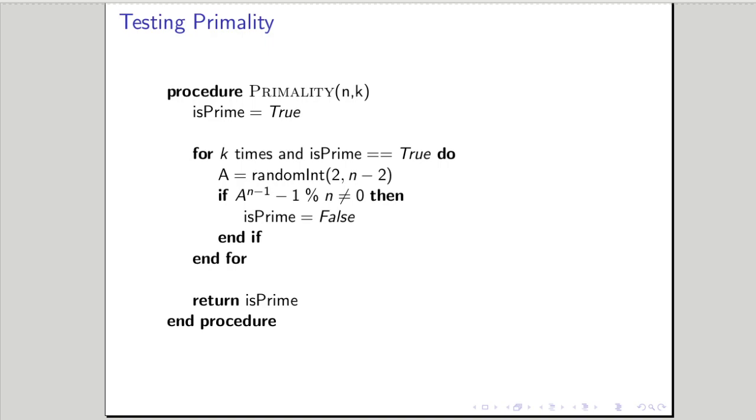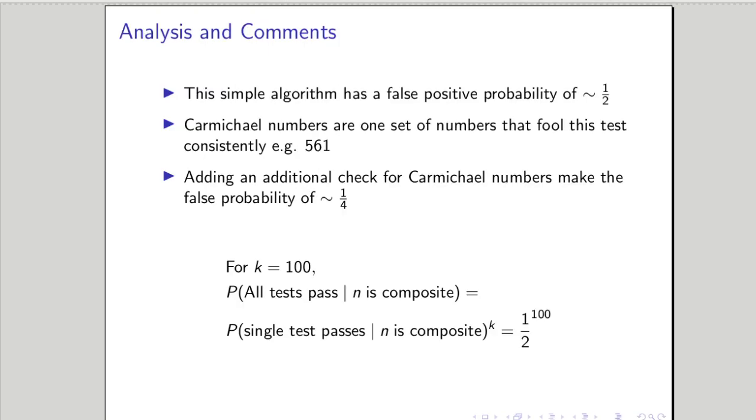Let's look at the rest of the aspects of random algorithms. So this simple algorithm has a false positive rate of about one half, meaning about half the numbers you can pull out of the air, whether they're prime or not, or if they're not prime will pass. Mathematicians tell us that one set of numbers that will dupe this test are called Carmichael numbers. So we can add an additional check in there, which will drop the false positive rate to one quarter.